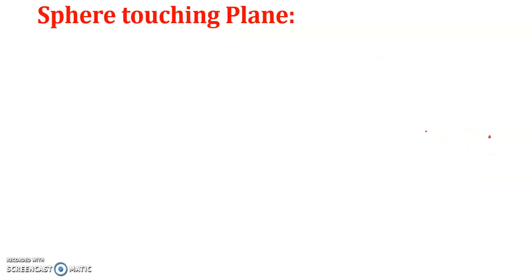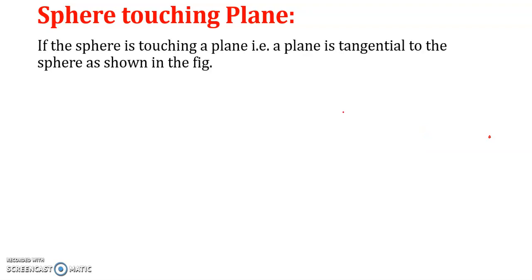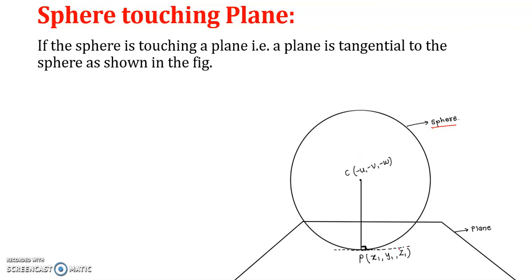The next case is a sphere touching a plane. When a sphere touches a plane, that plane is tangential to the sphere, as shown in the figure. This sphere touches the plane at the point of contact T. The line passing through the point of contact perpendicular to the plane also passes through the center of the sphere, whose coordinates are (−u, −v, −w). While solving examples involving a sphere touching a plane, we consider three important things: the equation of the sphere, the point of contact, and the equation of the tangential plane.